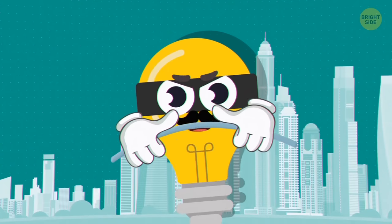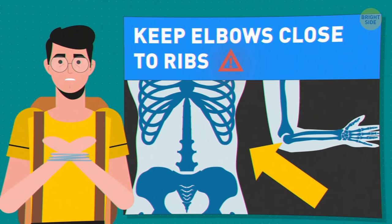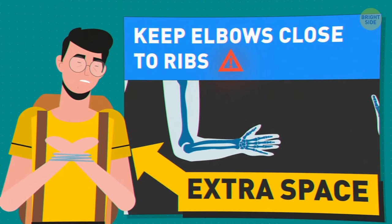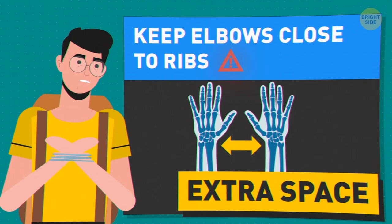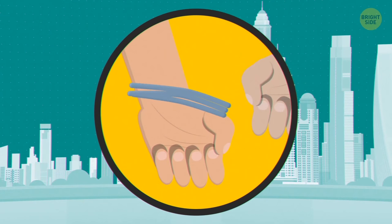Now imagine someone is about to tie your hands with a metal cable. Keep your elbows close to your ribs. This way, there will be some extra space between your wrists when you straighten out your arms. Carefully twist your wrists to free one hand through that space.